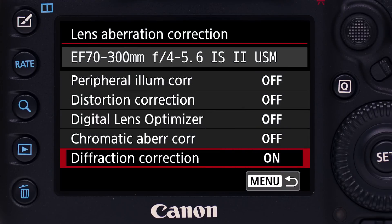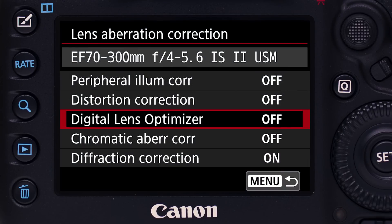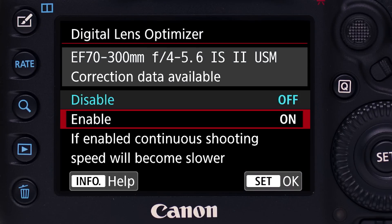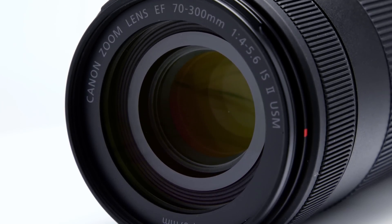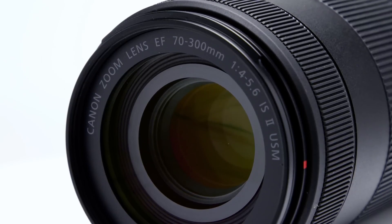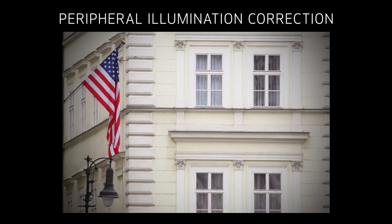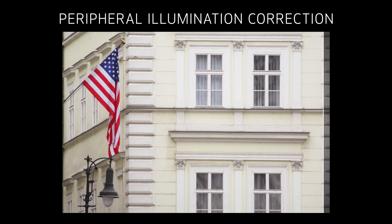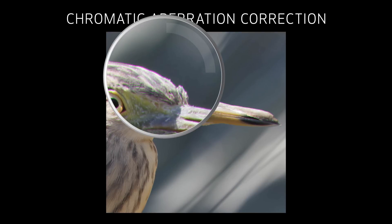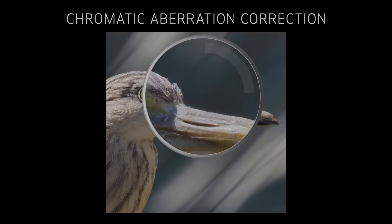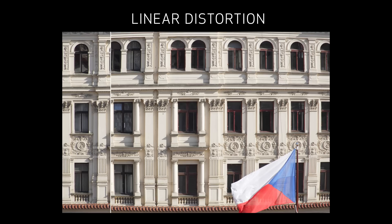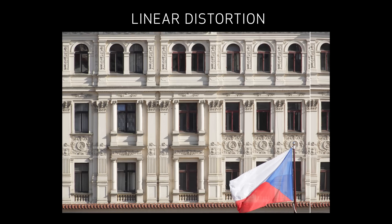In this episode, we'll look at lens aberration correction and more importantly, the new digital lens optimizer. In past EOS cameras, we've had three types of in-camera lens aberration corrections: peripheral illumination correction, which reduces the darkening you sometimes see towards the outer areas of a scene; chromatic aberration correction, which reduces the bands of false color that can appear around bright outlines; and correction for linear distortion, to reduce bending of straight lines.